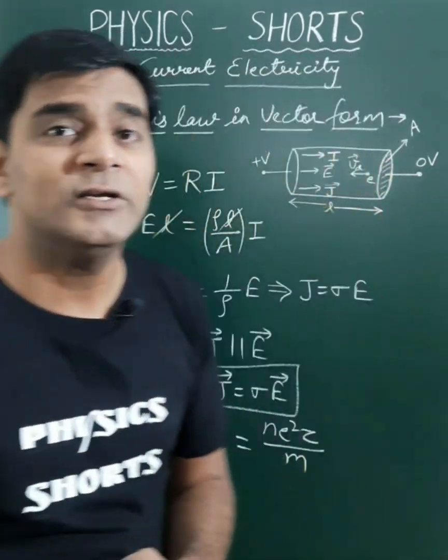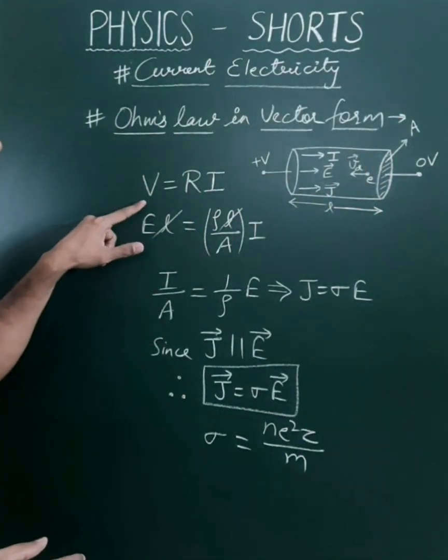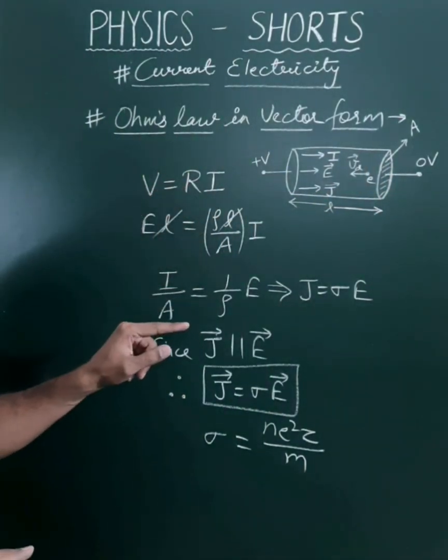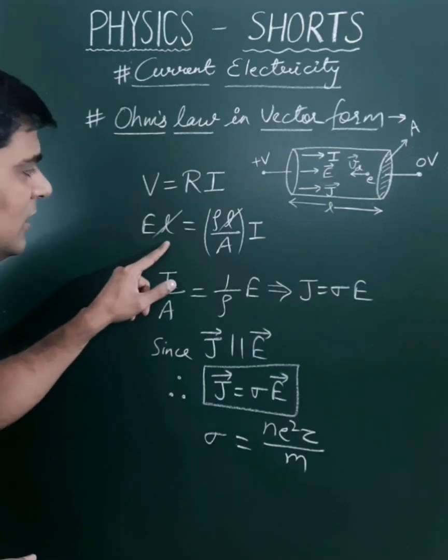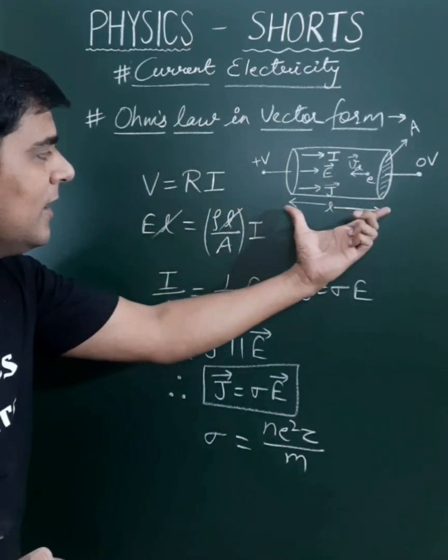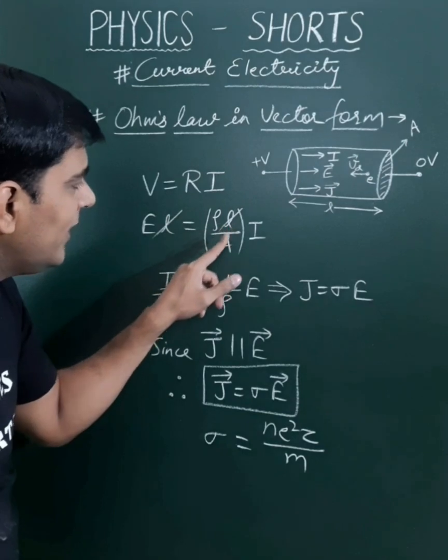We can derive this relation by simply taking the scalar form, which is V equals RI. Since voltage is electric field times the length of the conductor, and this resistance is ρL/A.